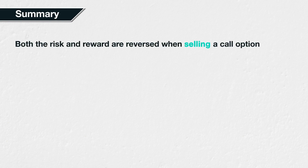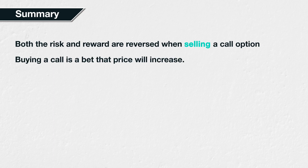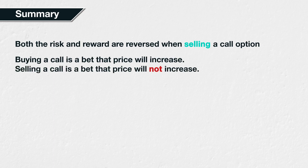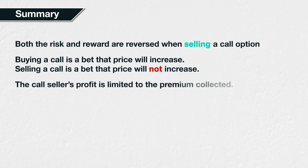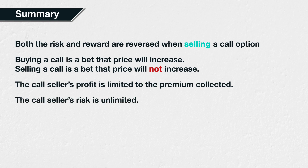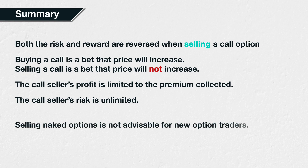In summary, selling a call option is the complete opposite of buying a call option — both the risk and reward are reversed. Any profit for the seller is a loss for the buyer, and vice versa. Buying a call option is a bet that the underlying price will increase; selling a call option, therefore, is a bet that the underlying price will not increase, or at least not increase beyond the strike price. The seller of a call option has a limited profit potential — their maximum profit is the premium they collected. The seller also has undefined risk, meaning they could lose far more than they initially collected if price increases significantly. As they have undefined risk, they will need to be aware of the margin system. When you're brand new to options, it's best to wait until you're confident you have sufficient knowledge of the risks before selling naked options.